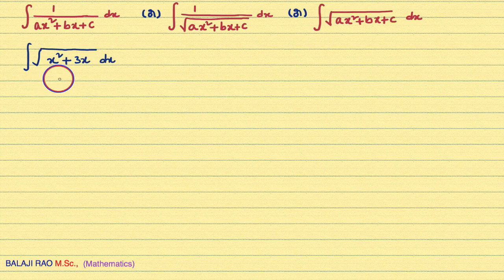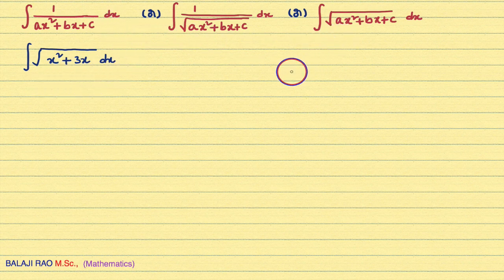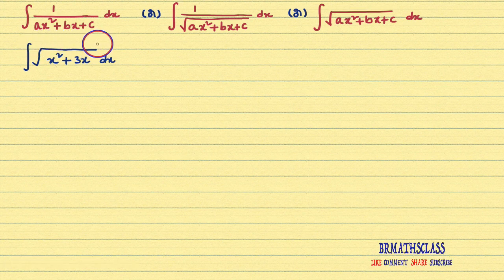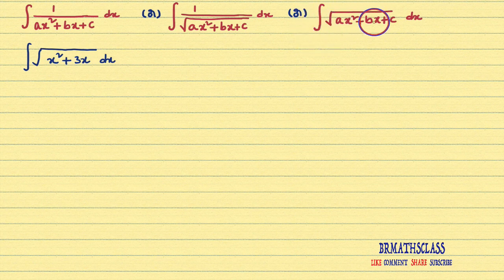If the given integral is any one of these three forms, then the procedure is same. First we will try to identify which form this given problem is in. Here you can see in the numerator 1 divided by is not there, so this problem comes under this form — integral of square root of dx.